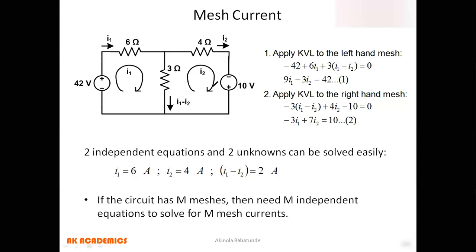Applying KVL to the first mesh: for voltage sources, we choose the sign based on where the clockwise current traverses the source. Since the current traverses from negative to positive on the 42-volt source, we write minus 42. The voltage across the six-ohm resistor is V = IR, so we get plus six I1.